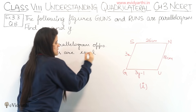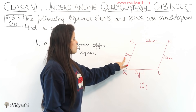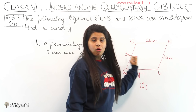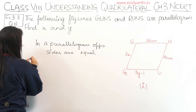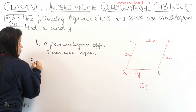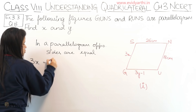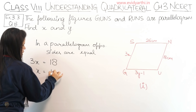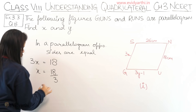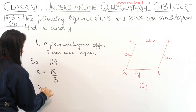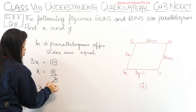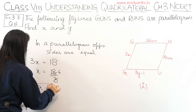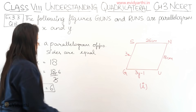So this means GU, which is 3X, will be equal to 18 because these are opposite sides. So we can write 3X equals 18, which gives X equals 18 divided by 3. So X equals 6.